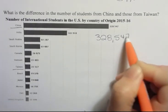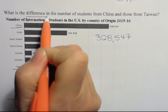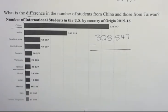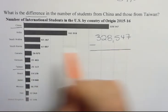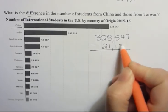328,547. So that's the value of the number of students from China. And then we're going to find the difference. So that's a subtraction problem. So we're subtracting the number of students that were from Taiwan, which is 21,127.